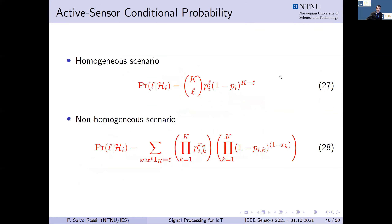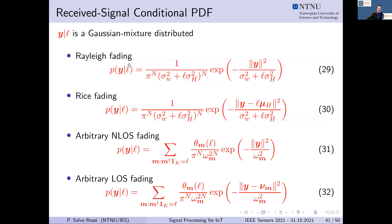However, we can characterize the number of active sensors given a specific hypothesis in both homogeneous and non-homogeneous scenarios. Given the number of active sensors, we can also characterize the statistics of the received signal at the fusion center in all four cases: Rayleigh fading, Rician fading, arbitrary non-line-of-sight fading, and arbitrary line-of-sight fading.